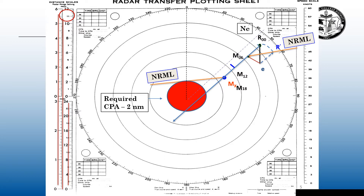If you want to know what time your new CPA is going to be, you can just continue walking down your relative motion line — like measuring distance on the DR track line that we learned in part one of this video series. So we have R00, minute 6, minute 12, minute 18, minute 24, minute 30, minute 36. To find out what time this new CPA is going to be, you find another right angle from that new relative motion line to the middle and interpolate — it's going to be approximately 34 minutes for our new CPA.